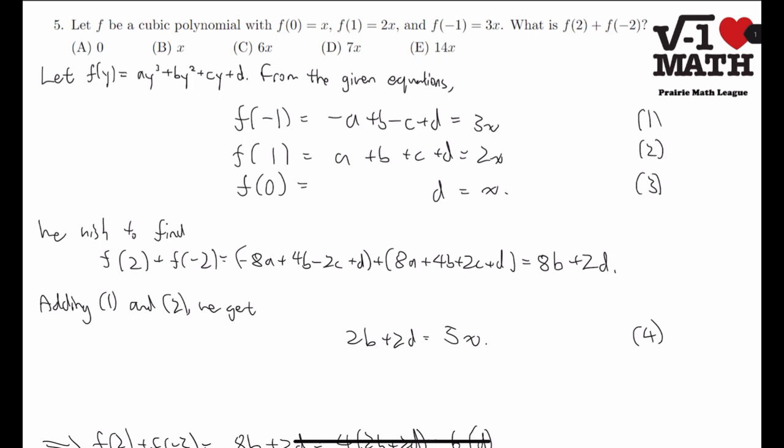For problem number 5, we have f as a cubic polynomial, with f(0) equals some constant x, f(1) equals 2x, and f(-1) equals 3x. And we wish to find f(2) plus f(-2).